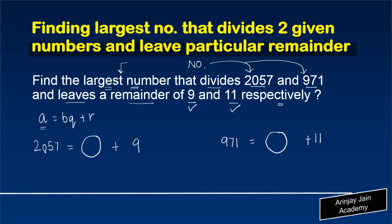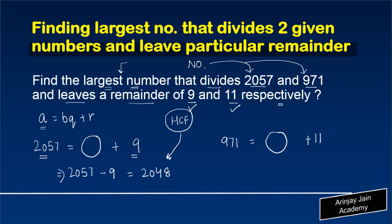If the number divides 2057 and leaves a remainder of 9, what it implies is that if from 2057 we subtract 9, we get 2048. Whatever that number is — let's call it the HCF (highest common factor) — this HCF would divide 2048 exactly. Similarly, this HCF will divide 971 minus 11, which is 960, exactly.